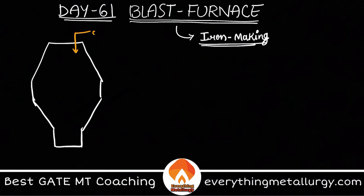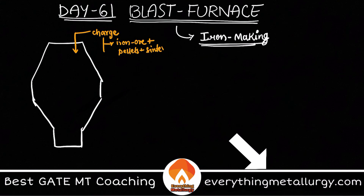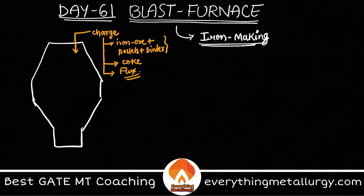We add all the charge or raw materials from the top — solid raw materials which are iron ore, pellets, or sinter. Usually sinters are more useful for the blast furnace iron making route. Other than this, you add coke and you add flux. The iron ore, pellets, or sinter is called the burden, which has the metallic values — meaning the iron content input comes from this burden.